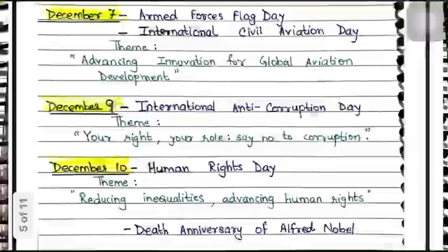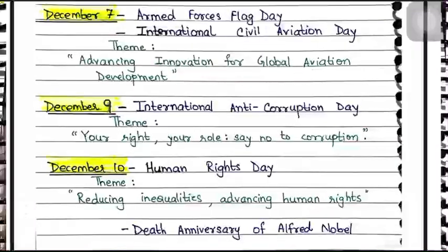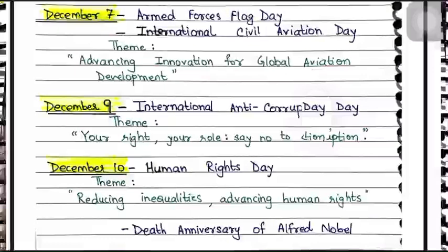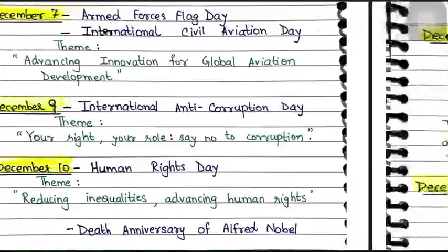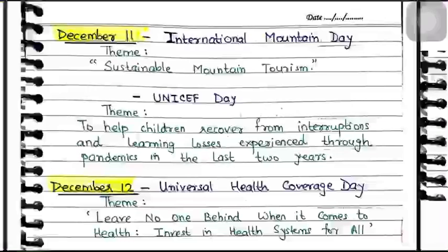December 9 is International Anti-Corruption Day, which highlights how corruption affects health, education, democracy, and justice. The theme was 'Your Right, Your Role: Say No to Corruption.' December 10 is Human Rights Day, with the theme 'Reducing Inequalities, Advancing Human Rights.' The Universal Declaration of Human Rights was adopted in 1948 by the United Nations General Assembly. December 10 is also the death anniversary of Alfred Nobel, a famous scientist, inventor, businessman, and the founder of the Nobel Prizes.